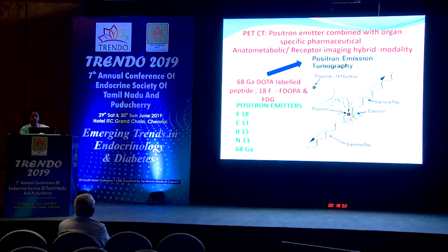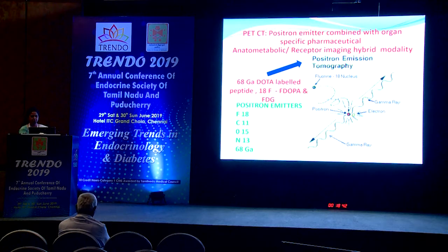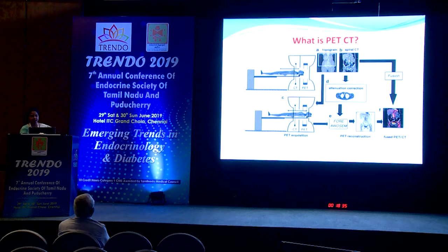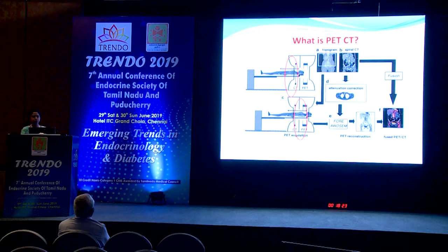When a positron emitter is injected, it emits positrons. A positron annihilates with an electron in the body and two gamma rays are emitted, which are imaged by the PET-CT machine. First, a whole-body CT is acquired, then the patient moves inside a ring of detectors where the PET is acquired. Finally, these are fused with available software to produce a fused PET-CT image.